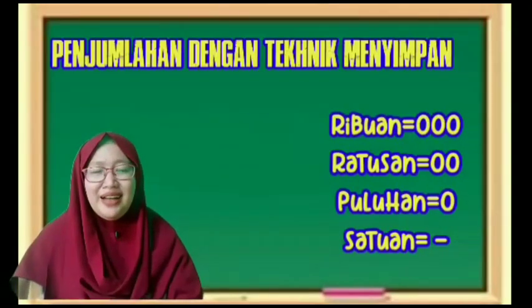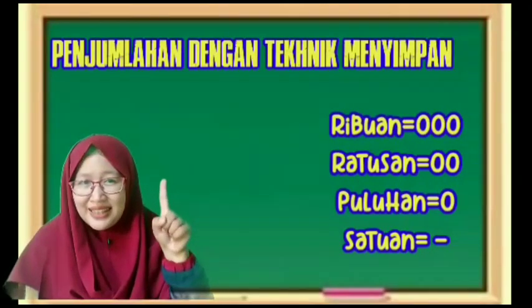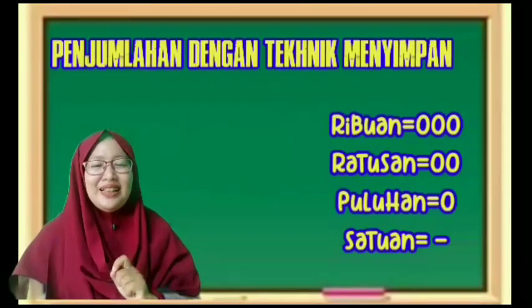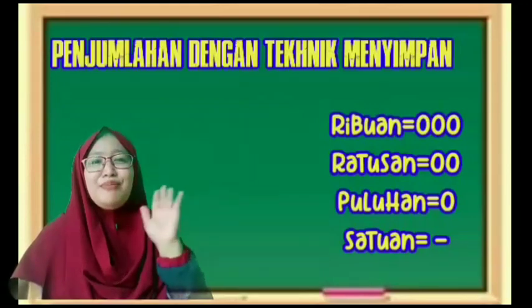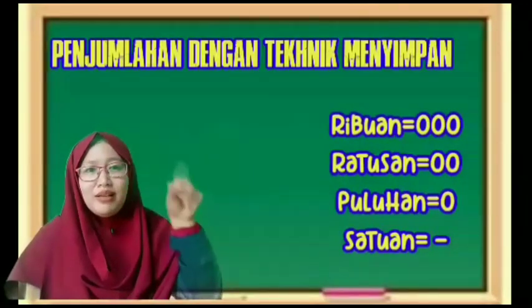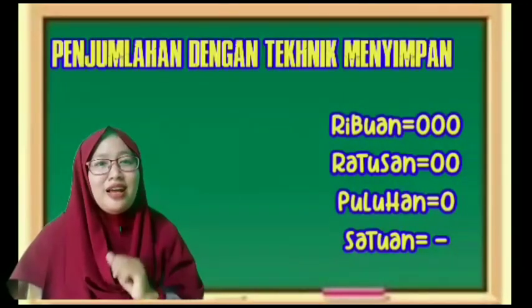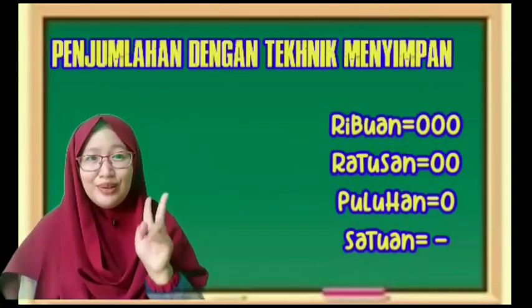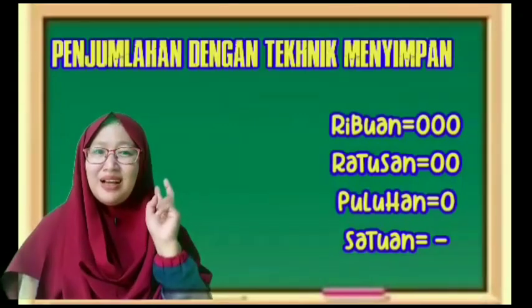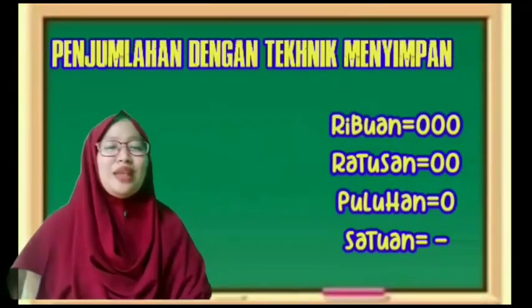Puluhan, ada berapa? Satu. Dan terakhir, satuan. Satuan tidak punya nol. Nolnya tidak ada. Jika nilainya satu, kalian hanya menulis angka satu. Jika ada dua hasilnya dua, maka kalian angka dua. Begitu selanjutnya.